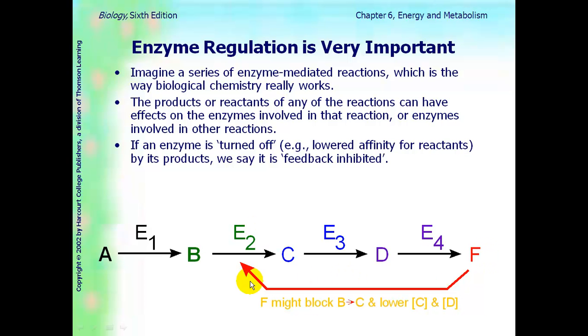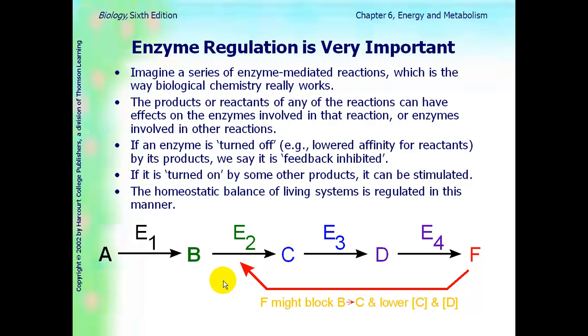So, for example, F might block B and C from occurring, and if that happens, then obviously C and D are going to be lowered and not made as much. So, if an enzyme is turned on, then the reactions would occur and things can be stimulated in the body. This maintains homeostasis in our body, and it's regulated by turning on and turning off these enzymes.